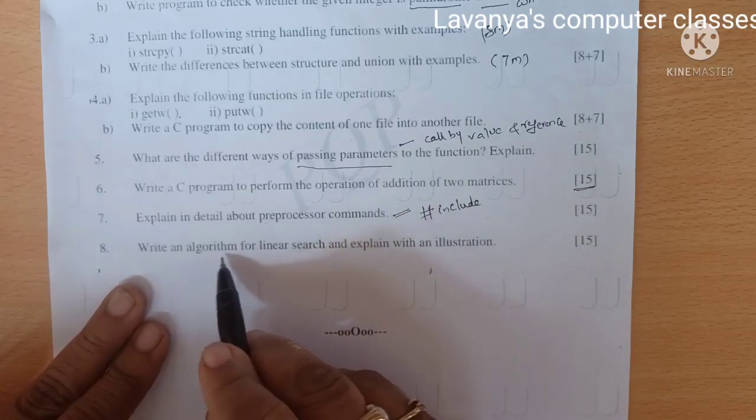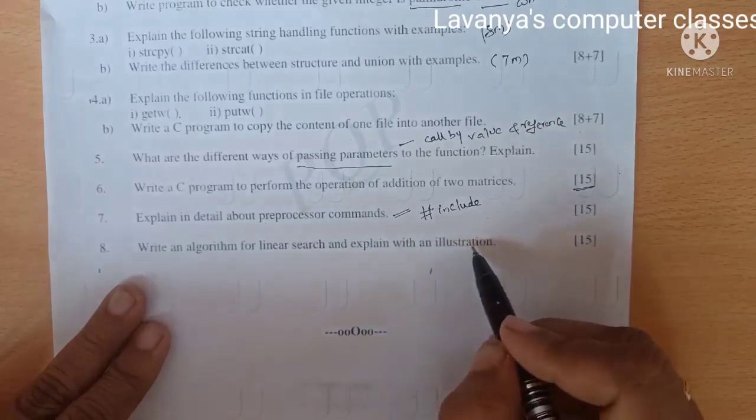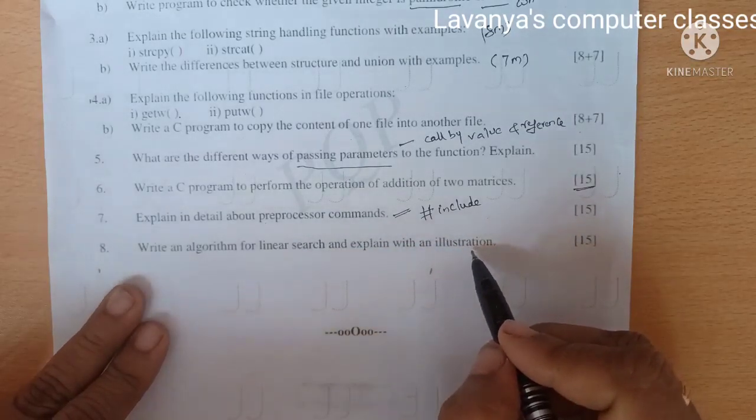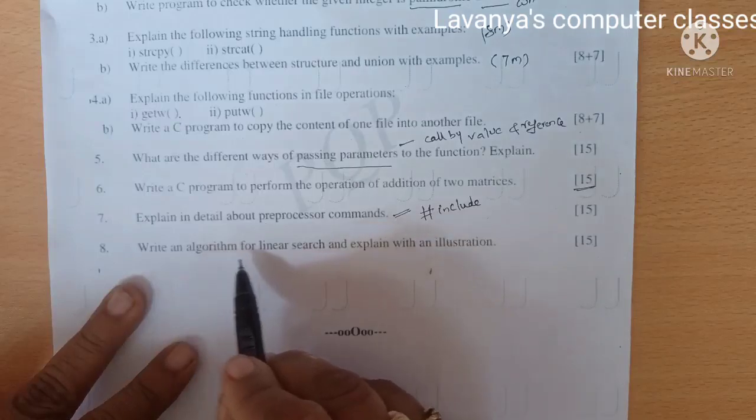Sixth question is write a C program to perform the operations of addition of 2 matrices. This is the program. Write a program for sum of 2 matrices.